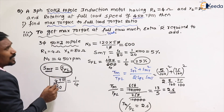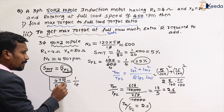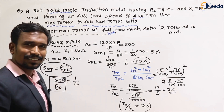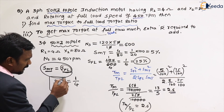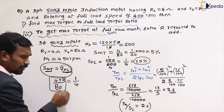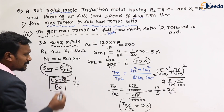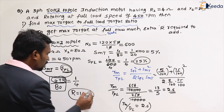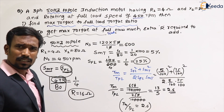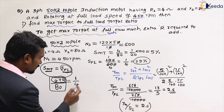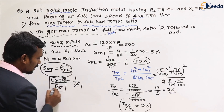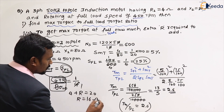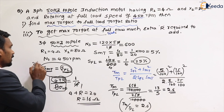We need (r2 + r_extra)/x2 = 1/4. So (r2 + r_extra)/80 = 1/4, meaning r2 + r_extra = 20 ohms. Since r2 = 4 ohms, the extra resistance r_extra = 20 − 4 = 16 ohms. Adding 16 ohms in the rotor circuit gives maximum torque at full load.